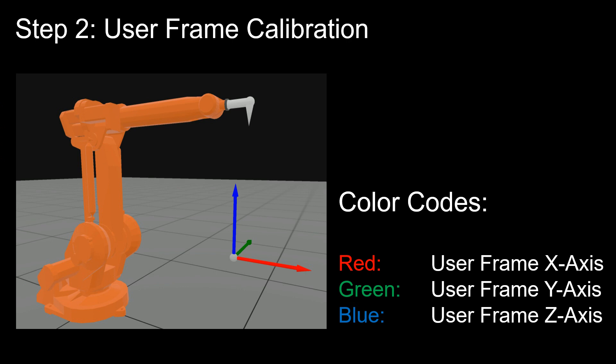When doing this calibration, we want to find the distance from the base of the robot to the origin of this user frame. That's the X, Y, and Z positions of the user frame. In addition, there can be an orientation change from the base frame to the user frame, which will be defined by another quaternion.